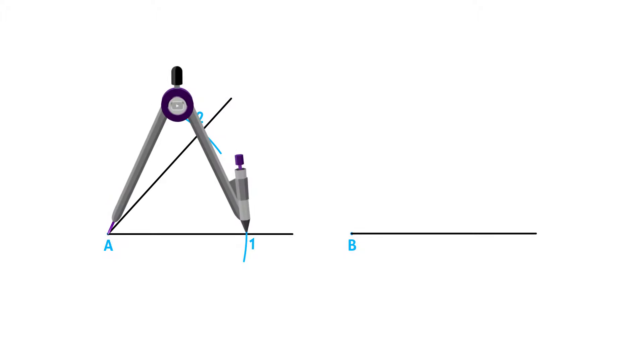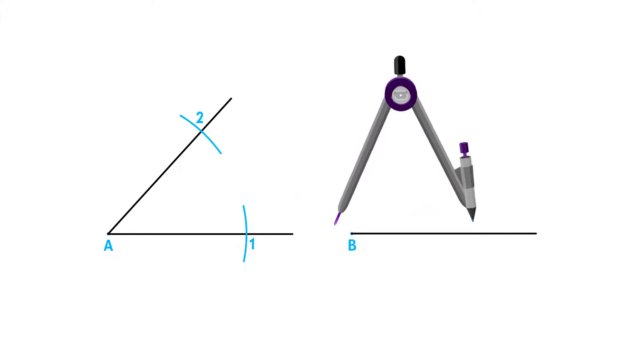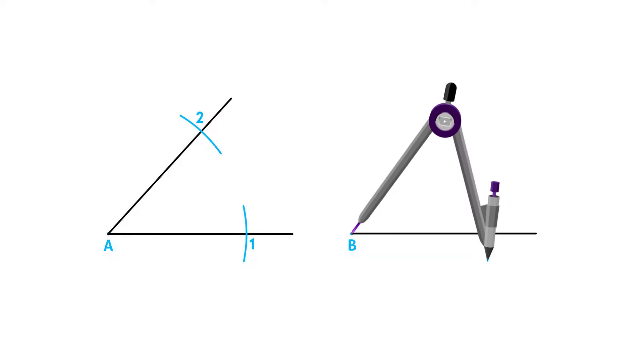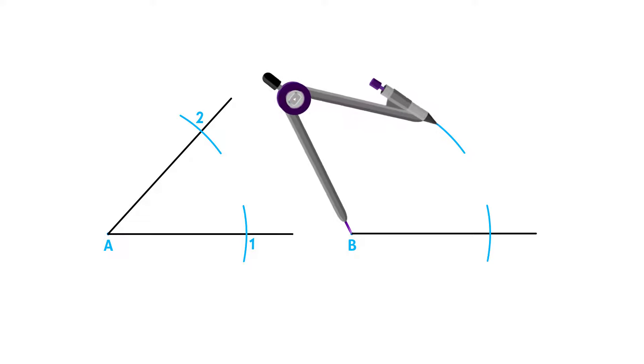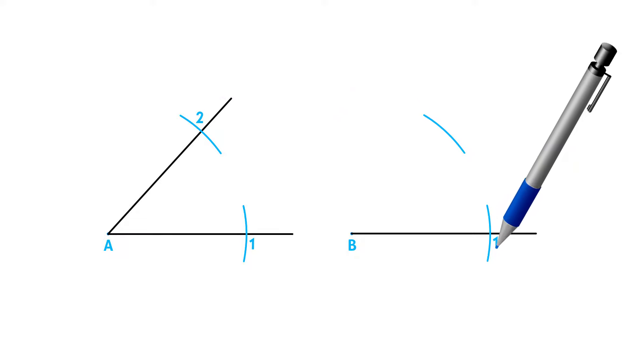Using the same measurement, place your compass on point B and draw an arc that will section the already drawn side and another arc more or less where point 2 could be. Label the intersection as point 1.